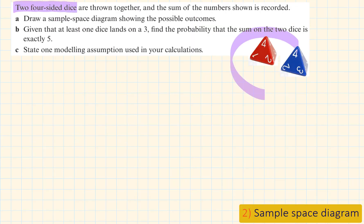Example 2. Two four-sided dice are thrown together and the sum of the numbers shown is recorded. Draw a sample space diagram showing the possible outcomes.